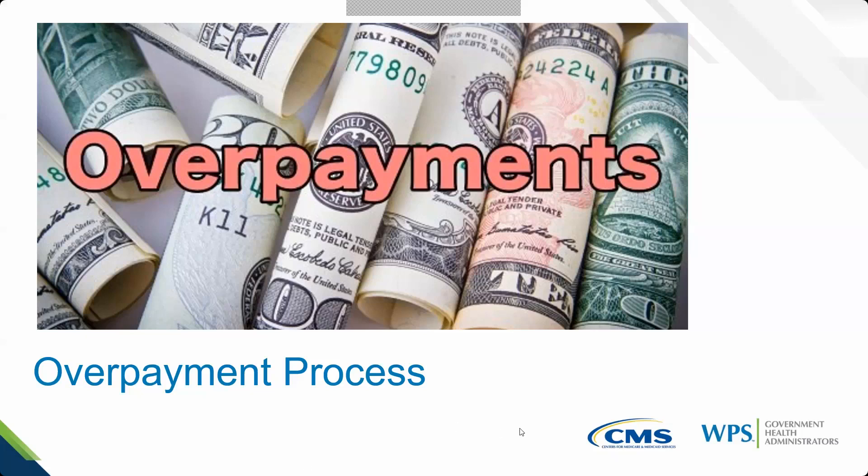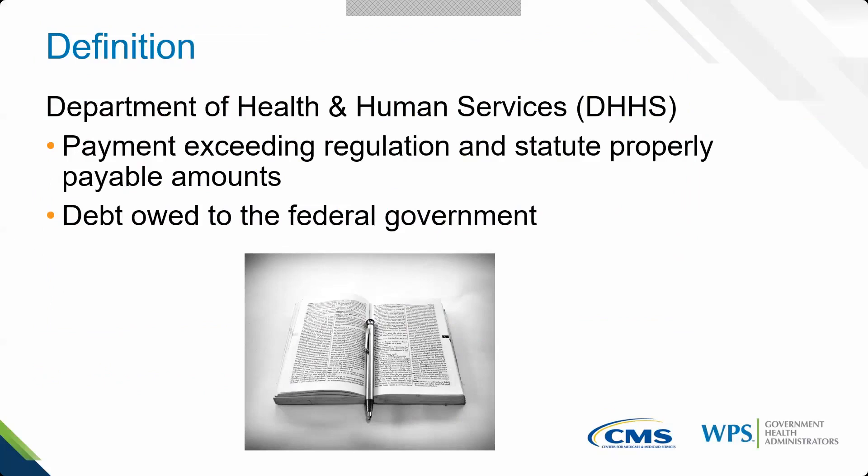First, we need to define what an overpayment is. To do this, we're going to look at the Department of Health and Human Services versus the Center for Medicare and Medicaid Services. In the hierarchy: the president heads the executive branch, underneath is DHHS, then CMS, and then contractors. The Office of Inspector General is at the same level as CMS under DHHS, and this hierarchy factors into the process.